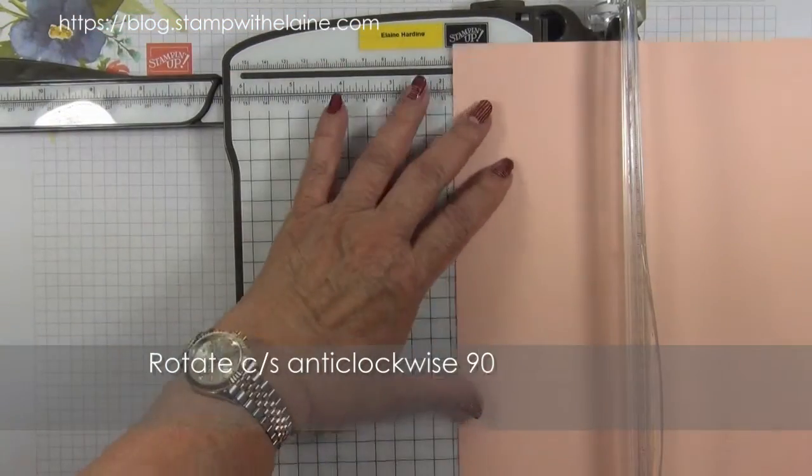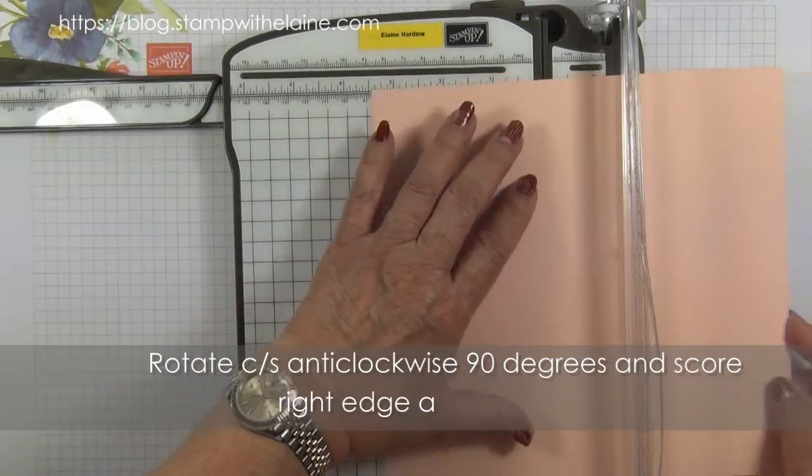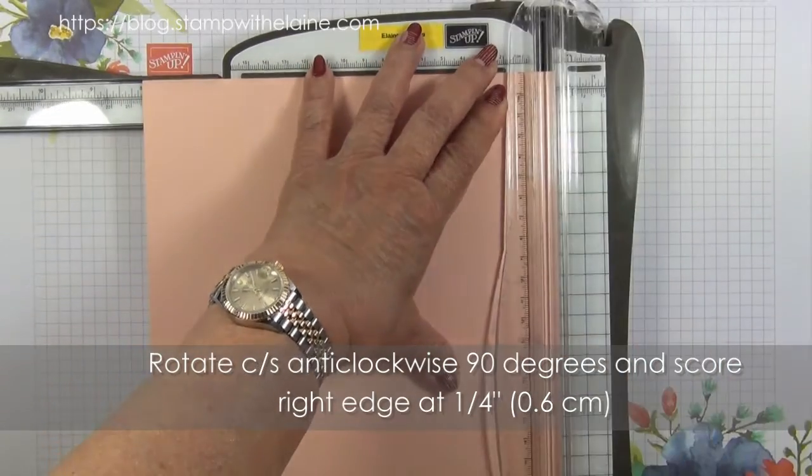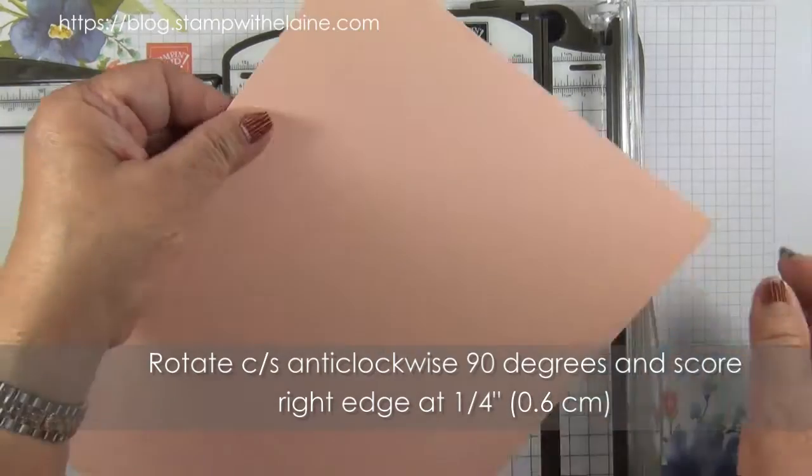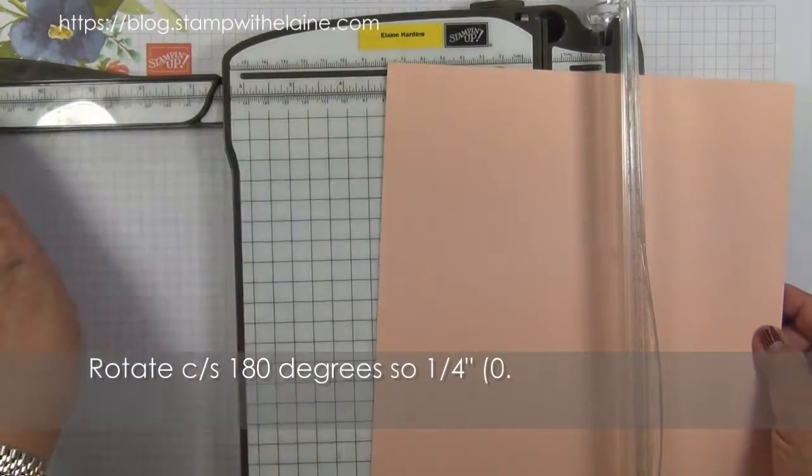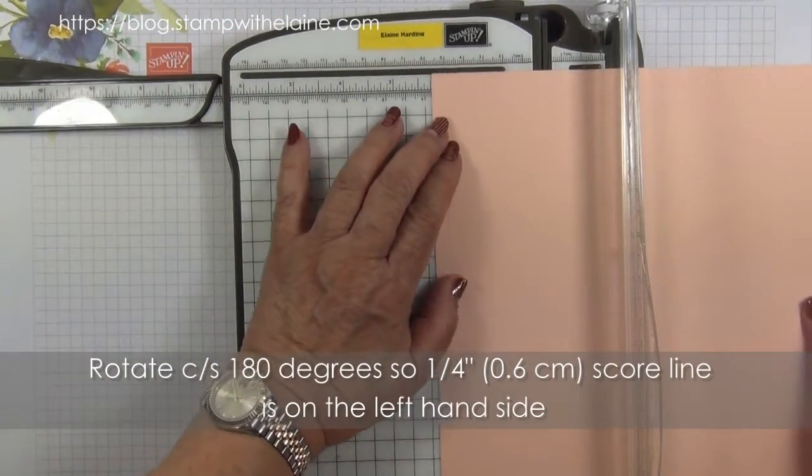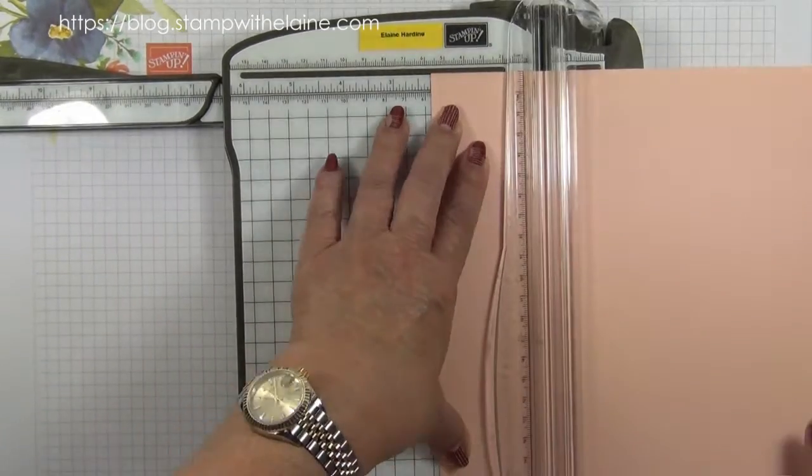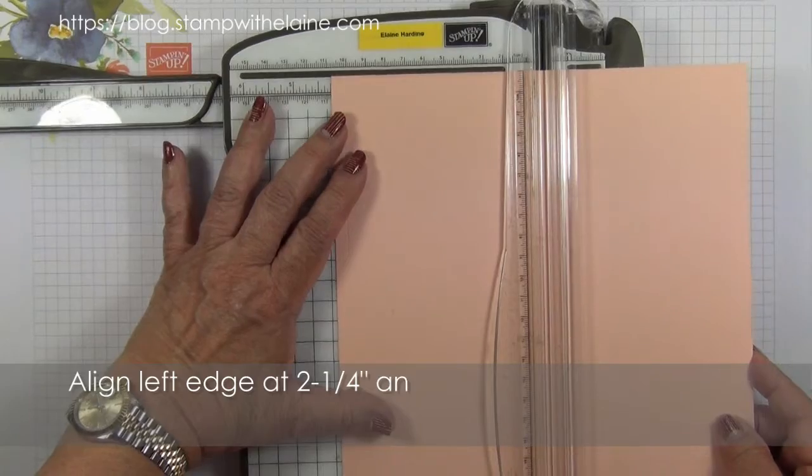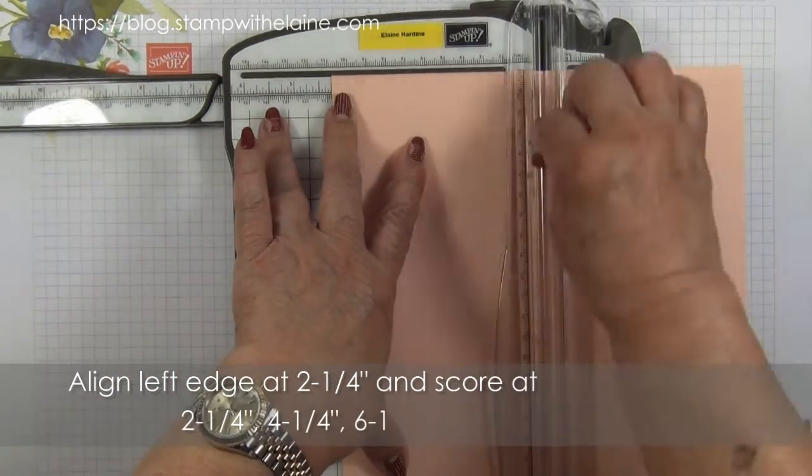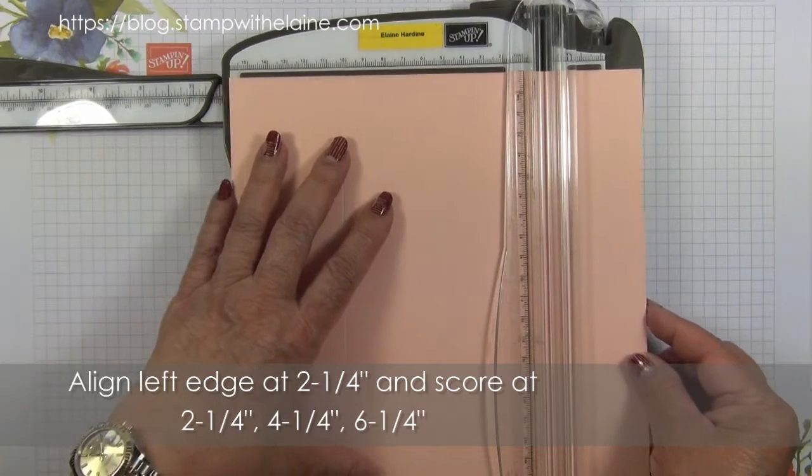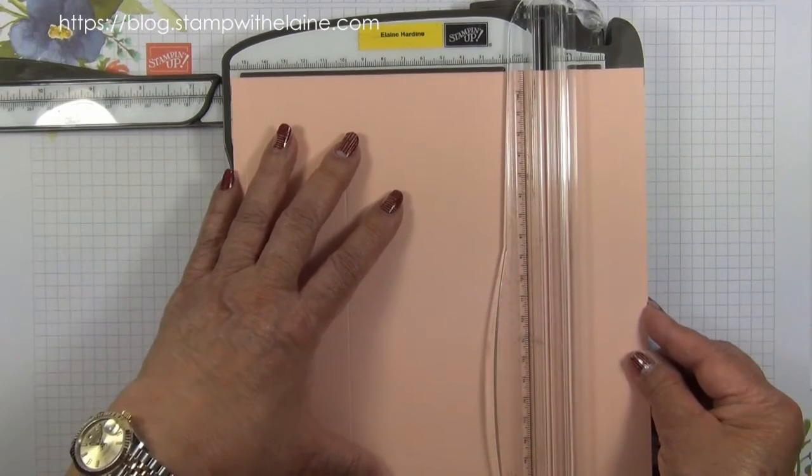Then you rotate your cardstock anti-clockwise 90 degrees. On the short side you score at a quarter inch, and I'm going to turn that round so the quarter inch is now on my left hand side. Then I'll score at 2 and a quarter inches, 4 and a quarter inches, and 6 and a quarter inches.